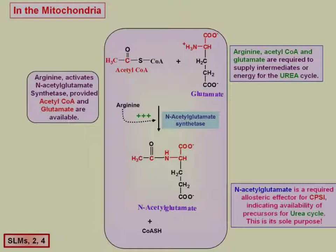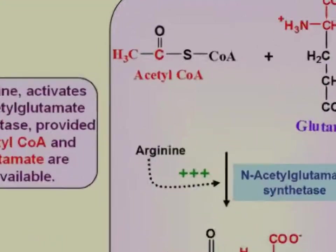One of the things to note is that if you want the urea cycle to run, you have to have glutamate and you have to have acetyl-CoA. If you don't have acetyl-CoA, the urea cycle will not run. So where does acetyl-CoA come from?